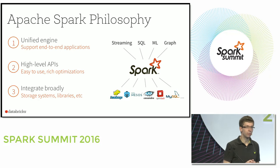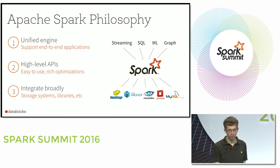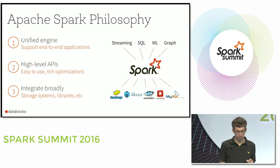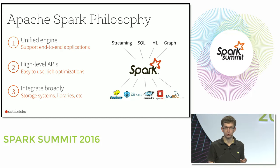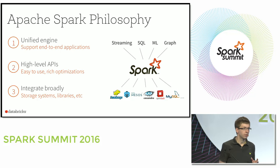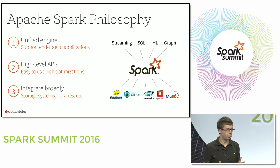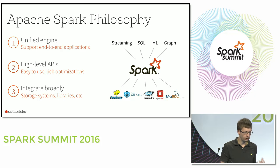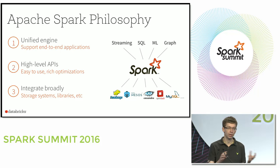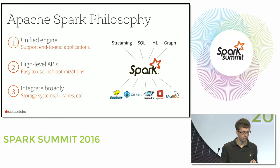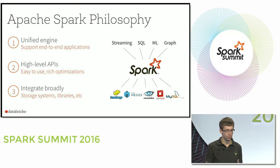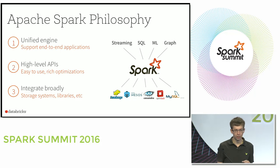A lot of the work in 2.0 goes back to the philosophy we have for the whole project, based around three key ideas. First, Spark offers a unified programming model and engine that supports many different types of applications, anywhere from batch jobs to streaming or interactive. The idea is to let users build end-to-end applications without having to hook together a whole bunch of systems and reason about how those systems interact. Most of the users we see actually combine many of these different processing modes.